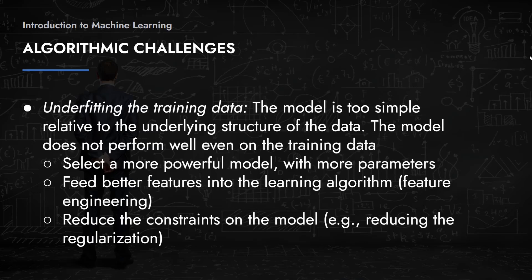Just as overfitting is a problem, underfitting the training dataset is also a problem. If the model is too simple relative to the underlying structure of the data, the model doesn't perform well even on the training data. In those cases, you can select a more powerful model — one with more parameters to fine-tune — or do some feature engineering to better select the features you're supplying the model with. You can also reduce the constraints on the model, such as reducing regularization.